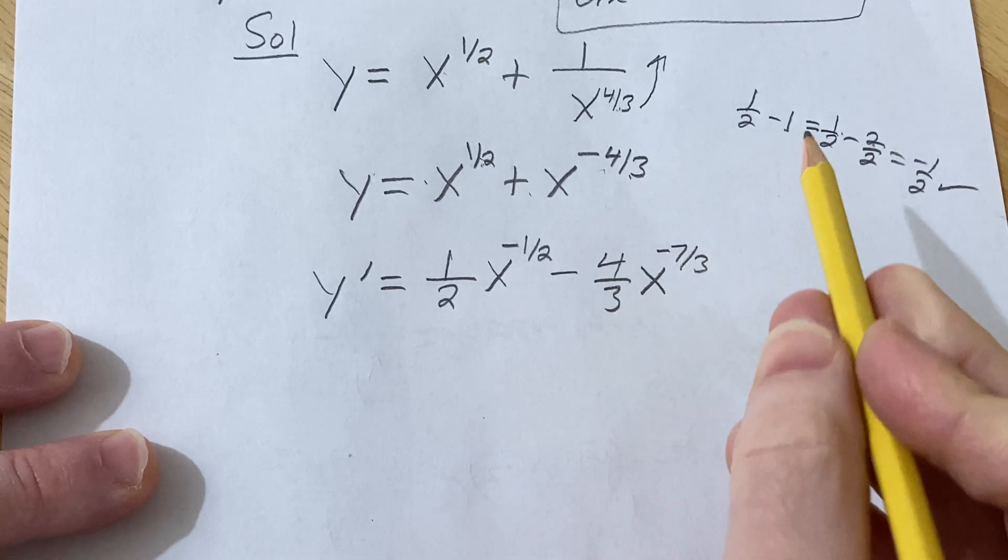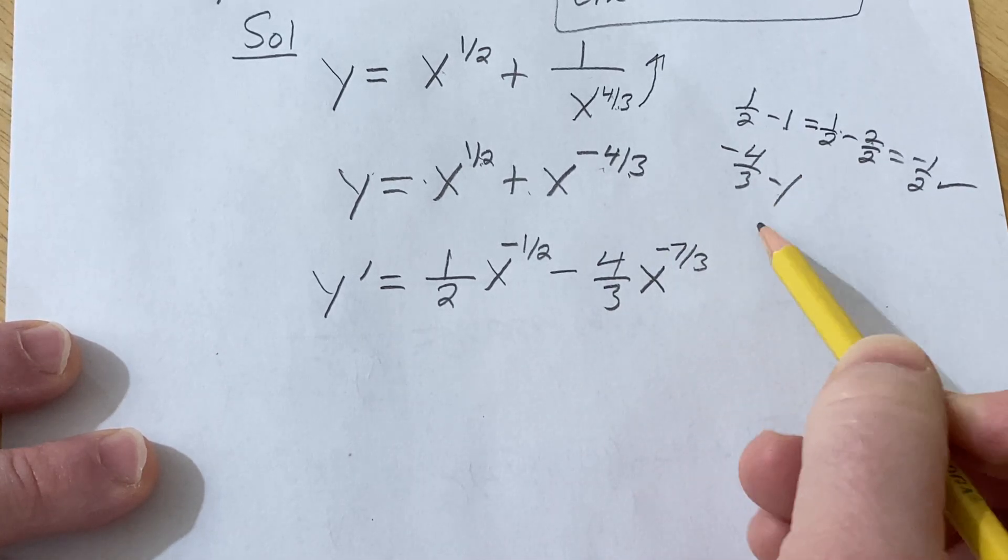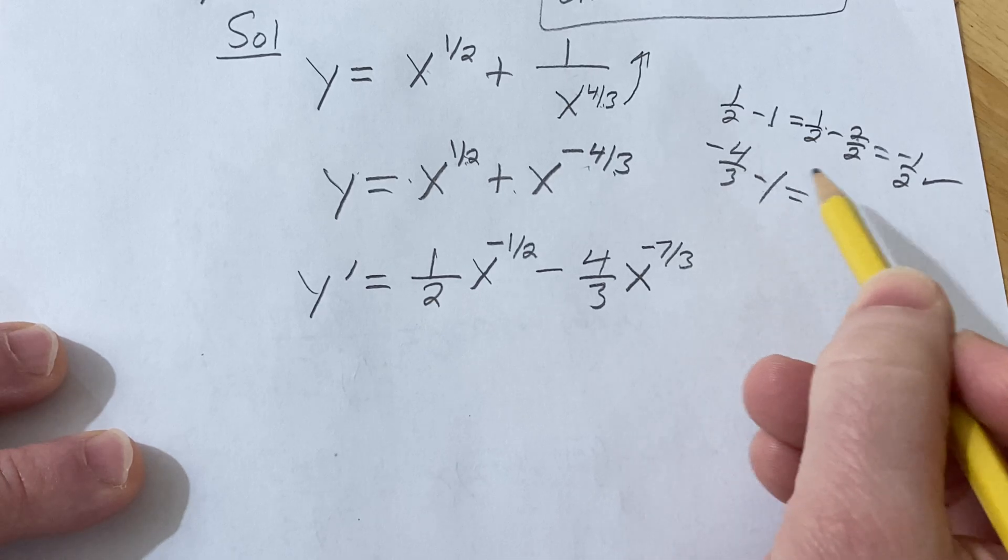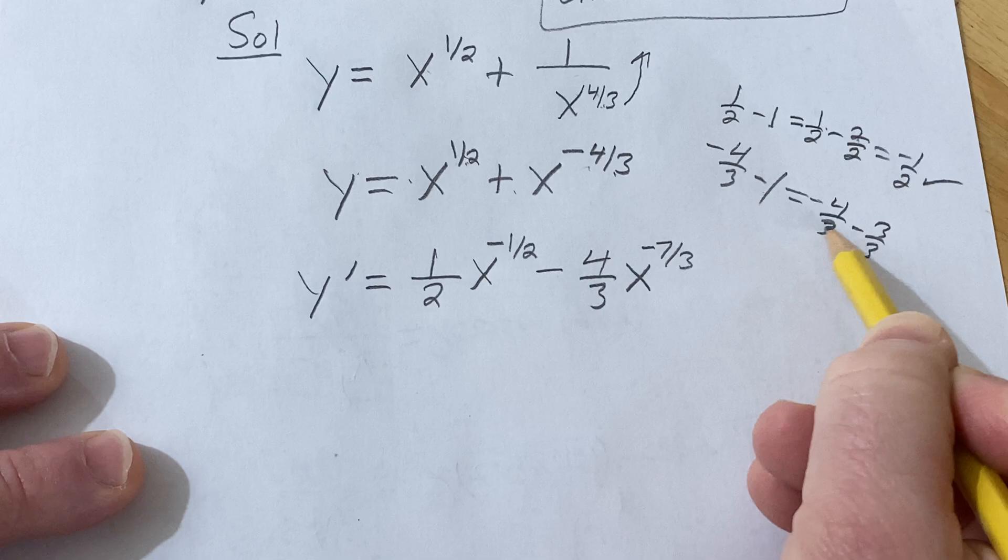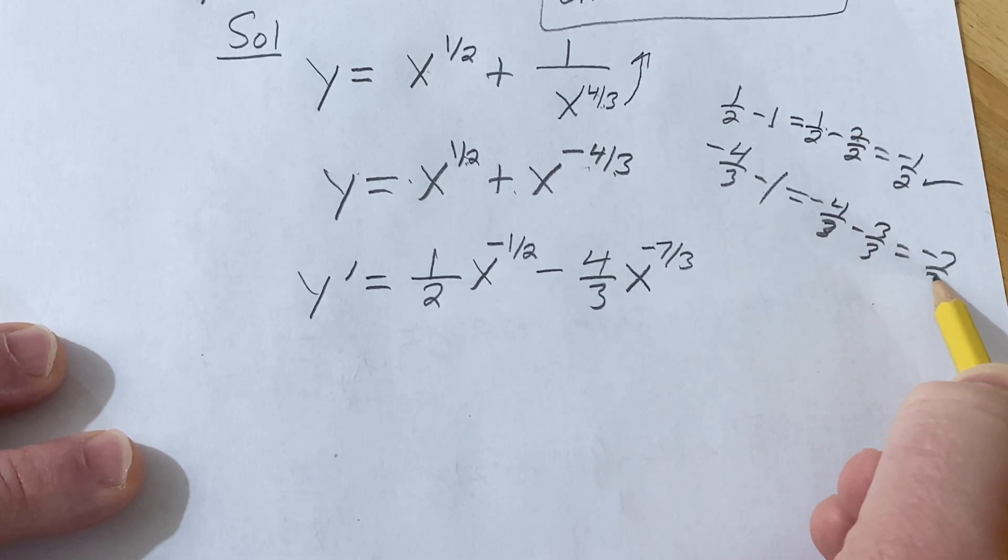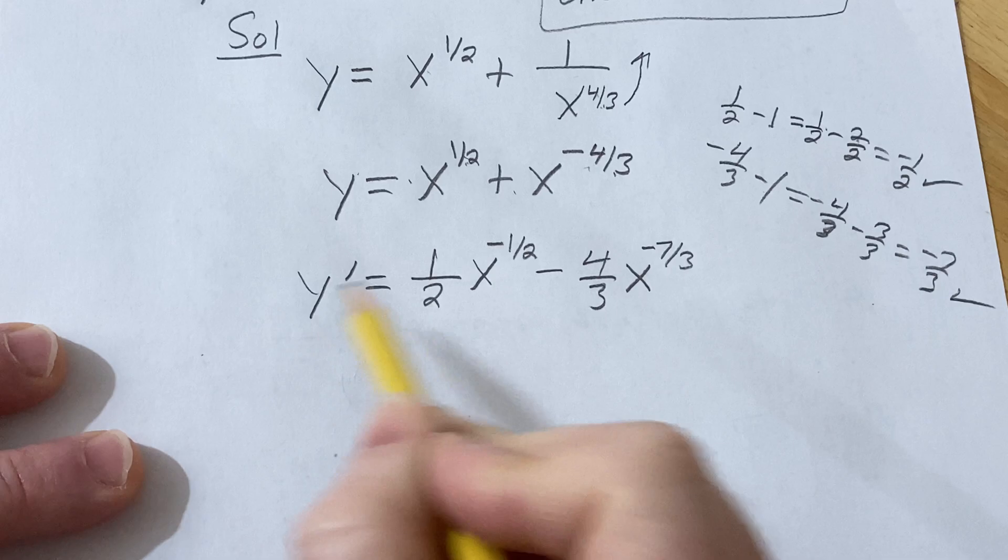And again, if you're not sure about that, you go to the side, negative four thirds minus one. How do you write one as a number over three? Well, three over three. And then you can subtract the numerators. Negative four minus three is negative seven. So that checks, and all is good.